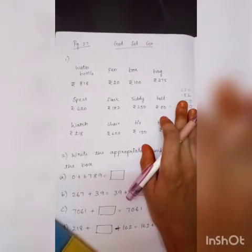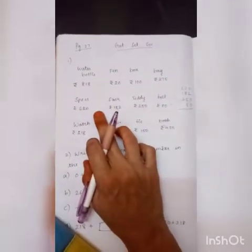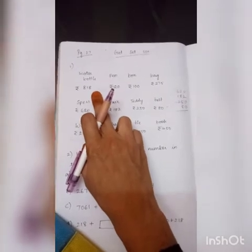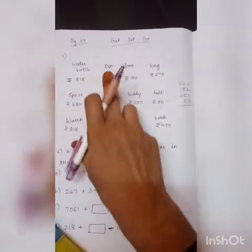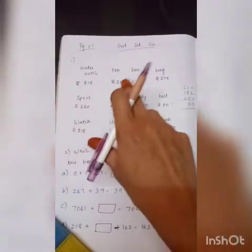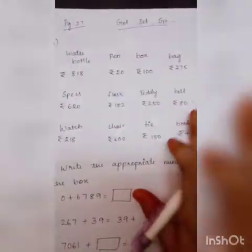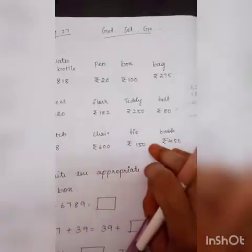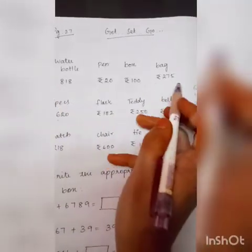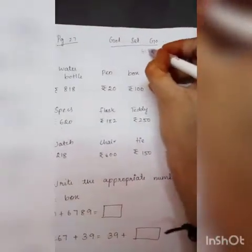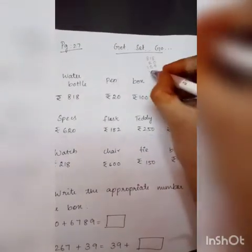Now what we are going to do is make a purchase with these things. The water bottle is 818 rupees, and the pen is 20 rupees. Every item has a cost. You can select any four items, add them, and see whether the answer is less than 1000 or not. Let me add these four items: 818, 20, 100, 275.